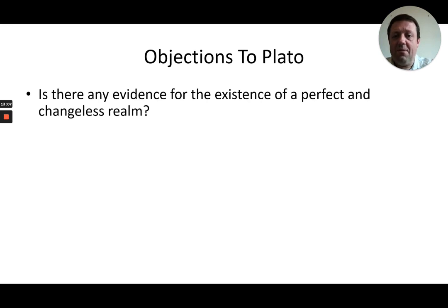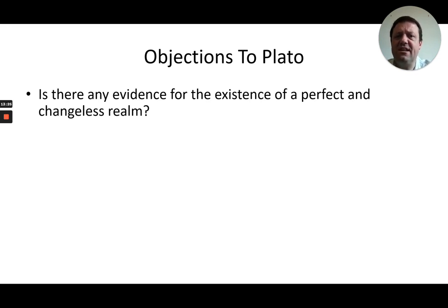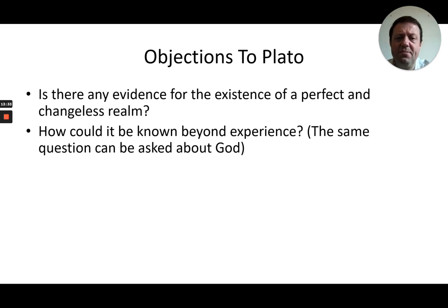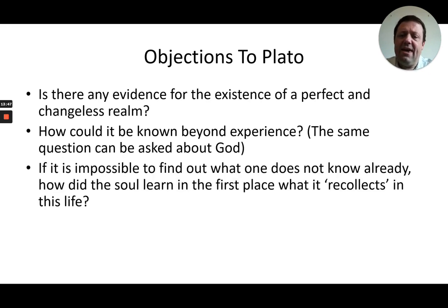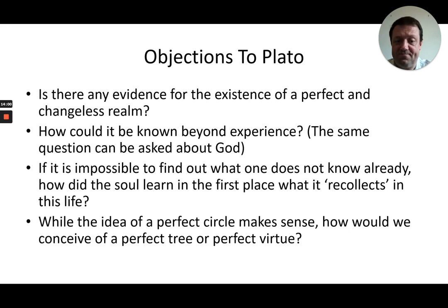There are quite a few objections to this. Firstly, is there any evidence for the existence of a perfect and changeless realm of forms? Where is this so-called place? If it's outside of space and time, what evidence do we have for it? And if the argument is that because it's outside of space and time there is no evidence, then it does seem a very shaky foundation upon which to base the doctrine of recollective knowledge. The same question can also be asked about God. Furthermore, if it's impossible to find out what one does not know already, then how did the soul learn in the first place what it recollects in this life? That's quite a substantial objection. And while the idea of a perfect circle might make sense, how do we conceive of a perfect tree or perfect virtue? These things seem much more subjective.